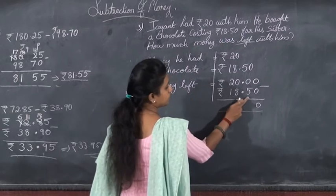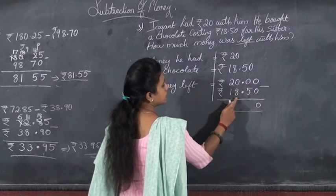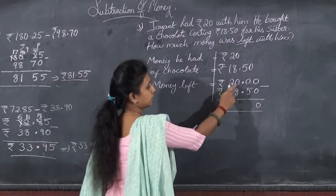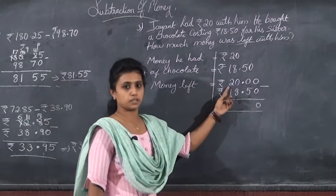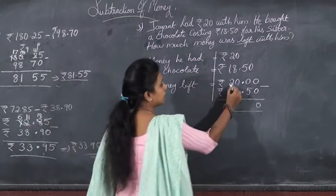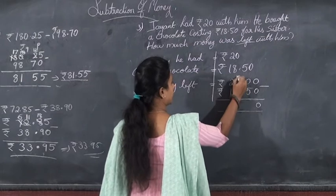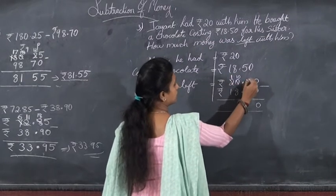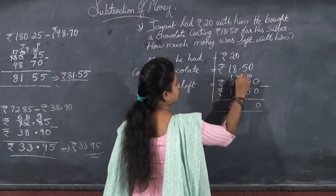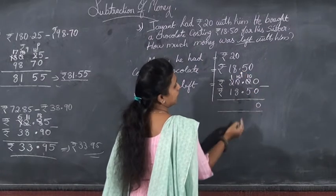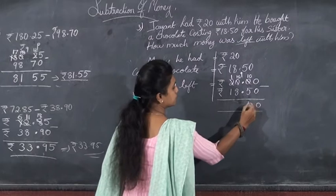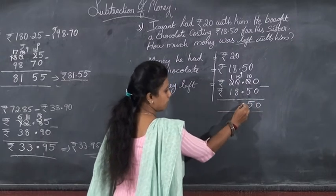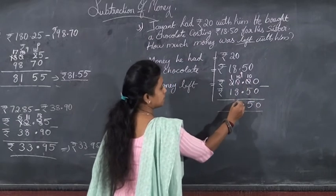Here you cannot subtract 5 from 0, same manner cannot subtract 8 from 0, so start borrowing from here. Borrowing start here, give one to this number, it becomes 10, remains 1. Again give one to this number, it becomes 10, remains 9.